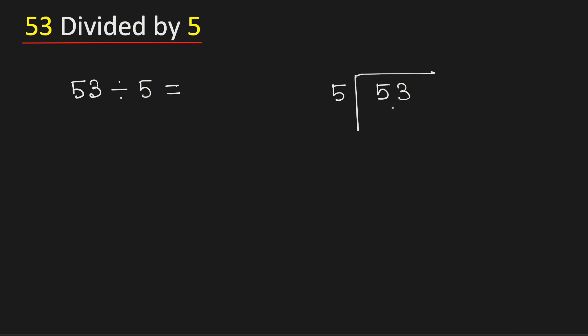Consider the first digit 5. We know that 5 times 1 is 5. Subtract, we get 0.